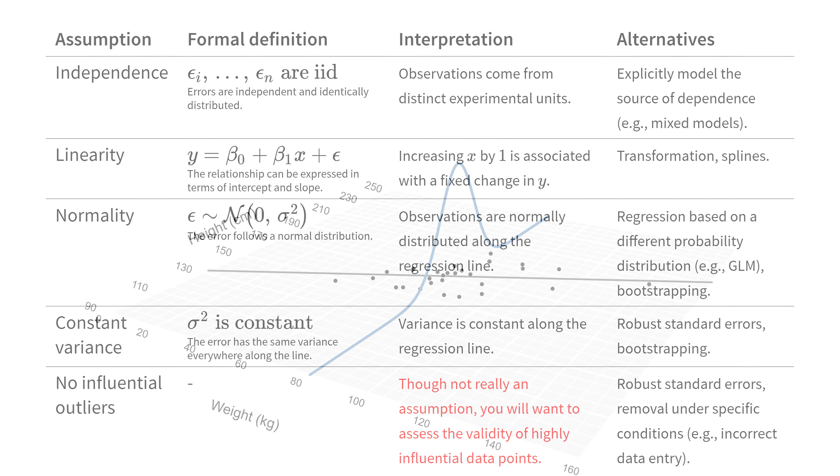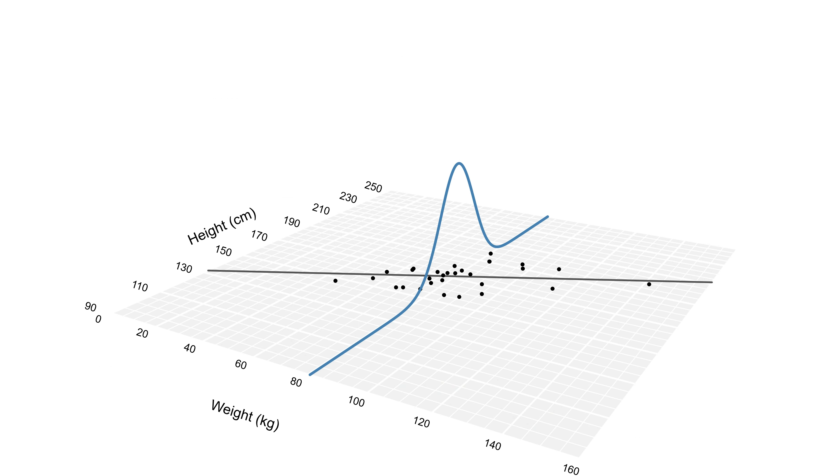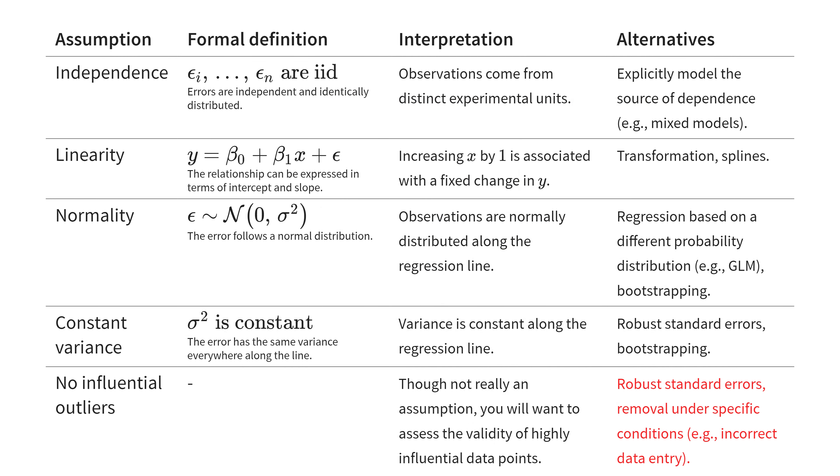That is why no outliers isn't really an assumption. Think about it. If we assume a normal distribution for the errors, then extremely large errors are unlikely, but definitely possible. Generally speaking, you do not want to remove outliers. But if an observation is outlying, you want to be extra sure that this observation is not some error in data entry, or otherwise understandably different from the rest, because that would warrant removal.